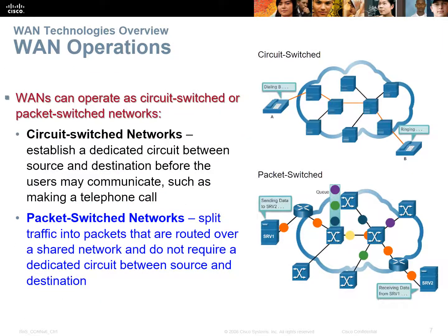There are two broad categories of WAN operations: a circuit-switched network or a packet-switched network. A circuit-switched network — like a telephone or ISDN — makes a hard connection through the exchange, so if any single point of failure occurs, the call will drop. In a packet-switched network, every packet moves through the ISP's infrastructure based on its own merits, so if there's any outage or rerouting, the end users probably don't even notice.